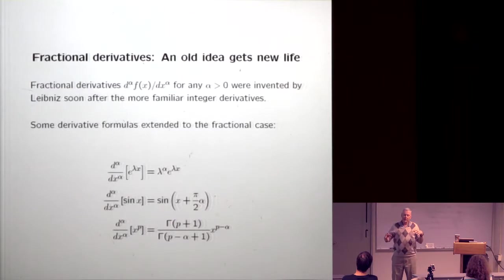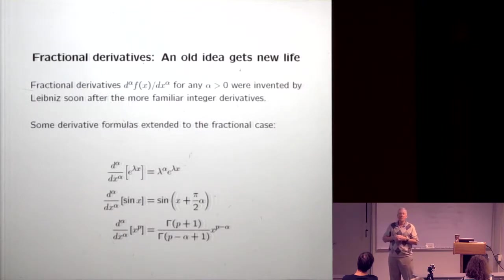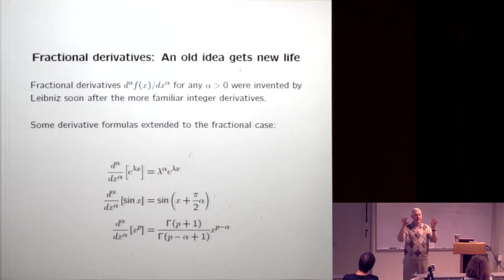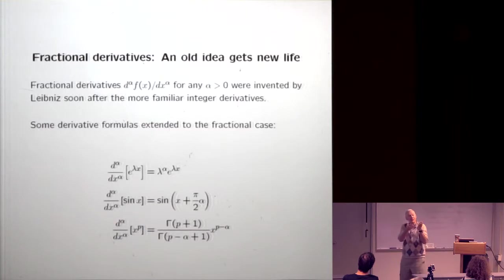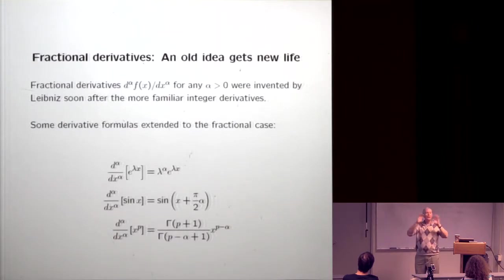Nobody really used fractional calculus for anything until recently. There's a guy named Heaviside — you might know him from the Heaviside function — who was more of an engineer than a mathematician. He started with the diffusion equation, took the square root of the operators on both sides, and got a half-derivative in time, which he used to construct solutions. Generally speaking, nobody used fractional derivatives for anything until 20 or 30 years ago, and now they are applied in all areas of science and engineering.